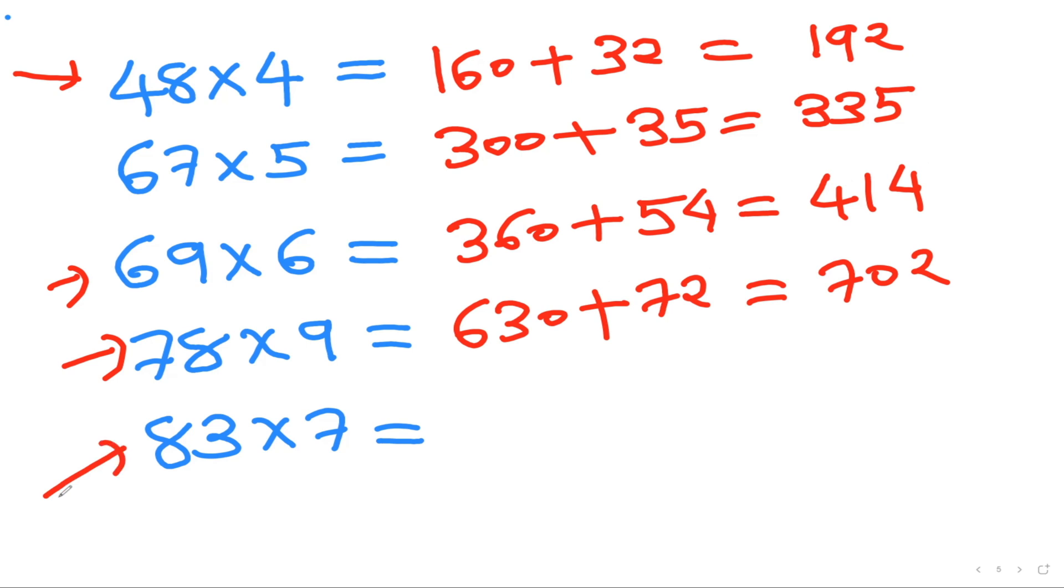83 times 7, so 80 times 7 is 560 plus 3 times 7 is 21, and answer is going to be 581. Is it not amazing?